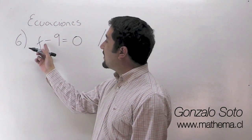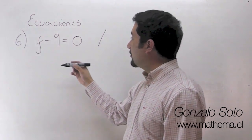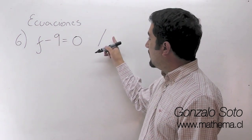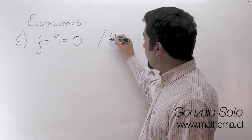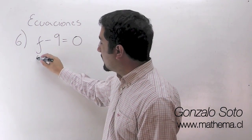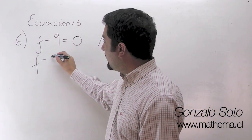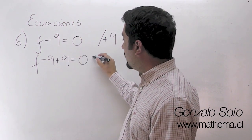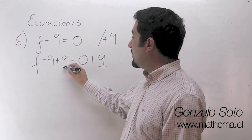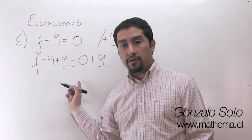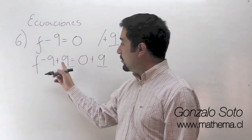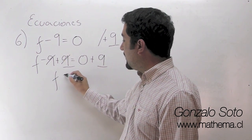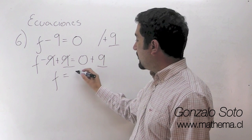Si la idea es dejar a f solito, nosotros tendríamos que mirar esto y decir que tenemos que poner acá el inverso de signo. Por lo tanto sería más 9. Sumamos 9. ¿Cómo nos queda? f menos 9 más 9 es igual a 0 más 9. Números iguales con distintos signos, esto es 0.